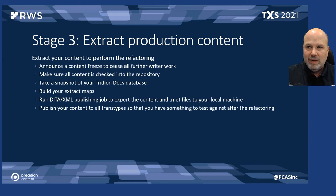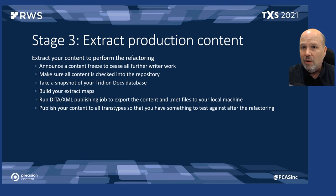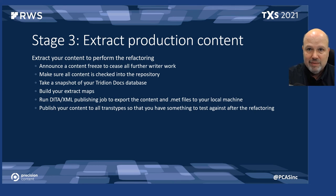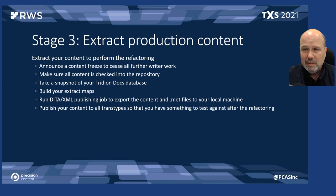When you're ready to extract production content, first announce a content freeze — cease all writer work, typically over a weekend. Make sure all content is checked into the repository, then take a snapshot of your Tritian Docs database in case you need to roll back. Build extract maps in Publication Manager, run the Data XML publishing job to export all content and met files to a local machine, and take copies of all published output — HTML, PDF, everything — to test against once refactoring is complete.